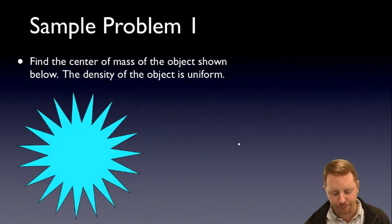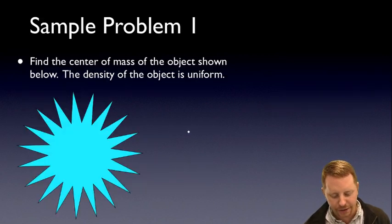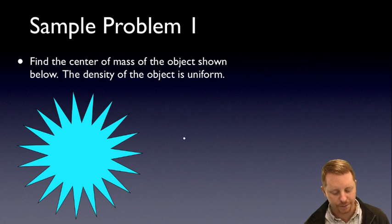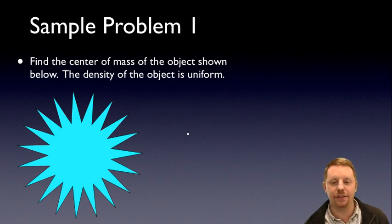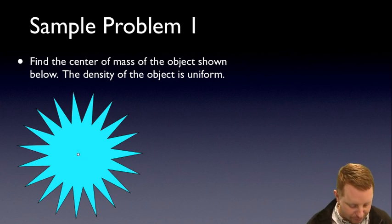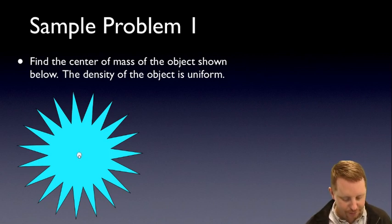Let's take a look at a simple sample problem: find the center of mass of the object shown below. We know the density of the object is uniform. In this case, that looks like a symmetric object, so it's pretty easy to see that the center of mass must be right in the center.